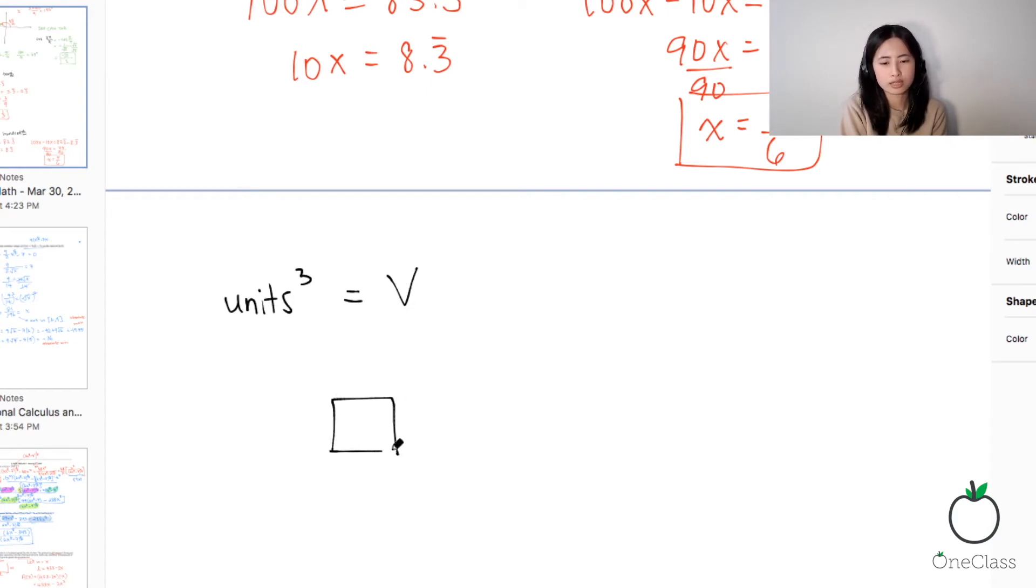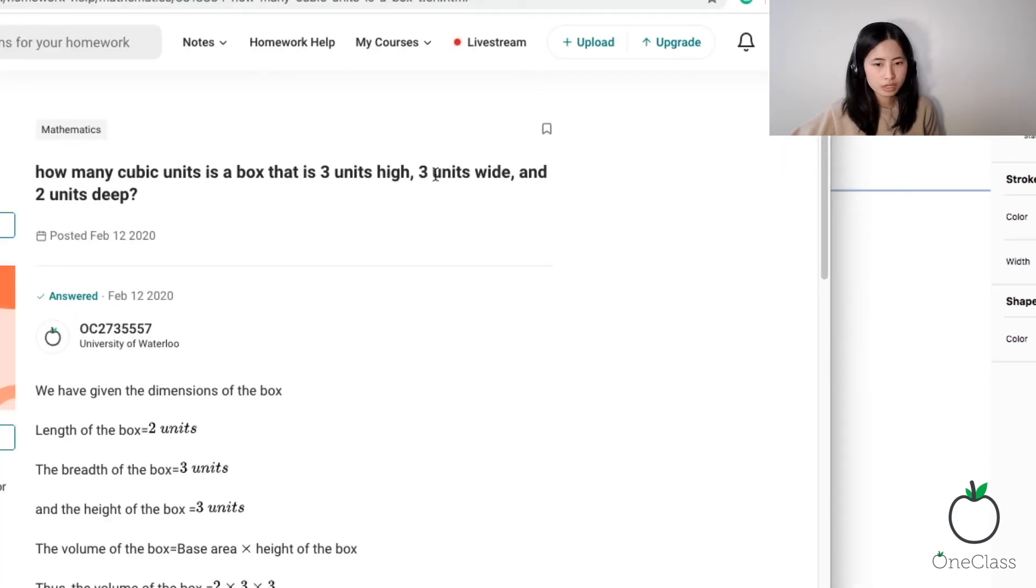So if you're looking for the volume, they're saying it's a box. So a box would be a cube. I mean, not the cube over here. Cube just means it's raised to the power of three, but it's a box. So we're assuming that it's a cube shaped. Okay, so it's a cube, and basically the question is saying we have three units high, three units wide, and two units deep.